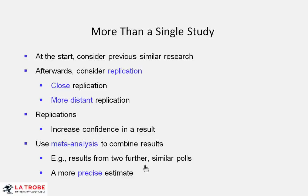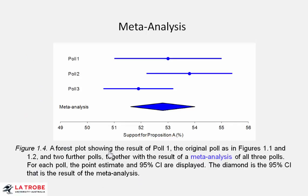Suppose we had two further similar polls that asked reasonably similar questions of a similar population of likely voters. What we're after is a more precise estimate. Here we have the first poll — mean and confidence interval — second poll, third poll, all presented in a picture called a forest plot. You can think of the overall combination as a sort of weighted average of these three point estimates.